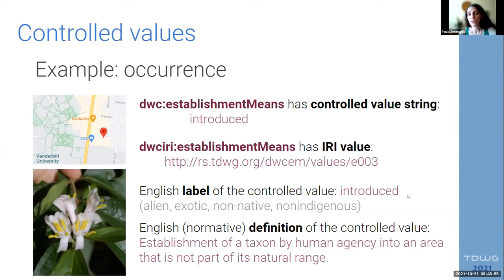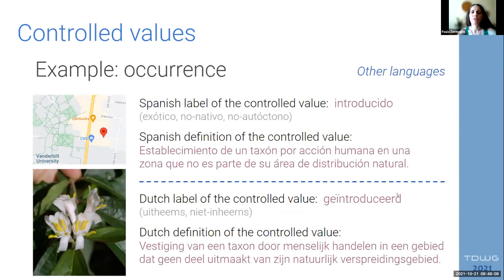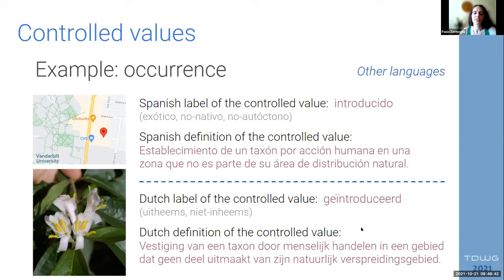It's important that we translate this because we definitely don't use this definition in other languages, and we don't use this label in other languages. In Spanish, the translation of the label would be 'introducido,' which has its own synonyms in Spanish, and we can establish a definition in Spanish. The same we can do for Dutch. We can translate the label and the definition in every single language, and we can change it over time to adjust and improve it.